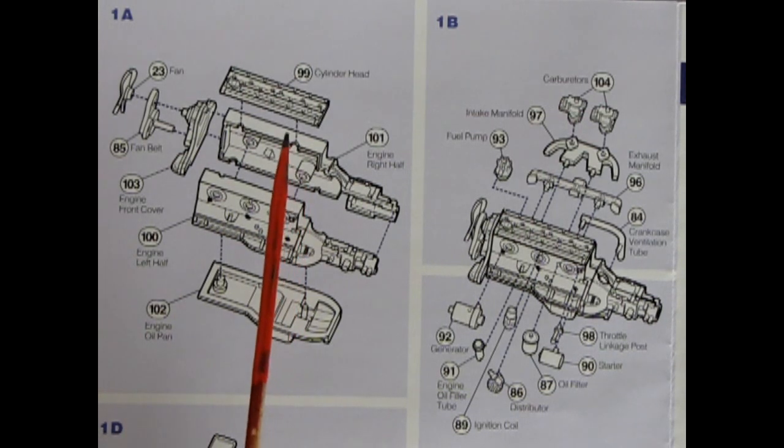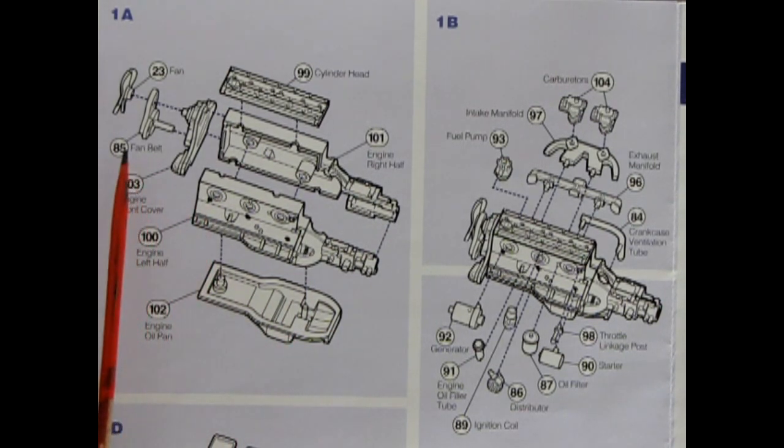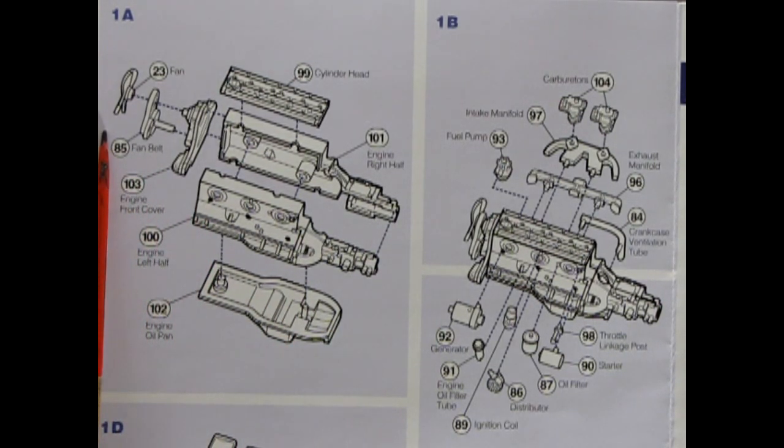Here we have the cylinder head, the right and left hand side engine block with transmission, oil pan, front timing cover, fan belts and the fan.